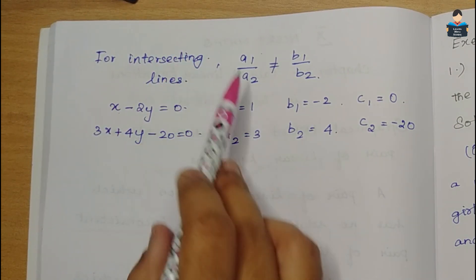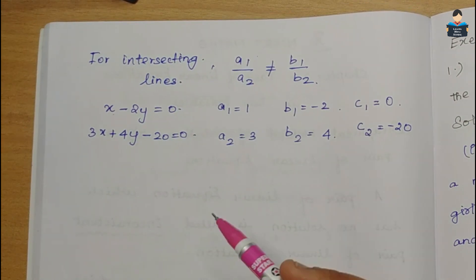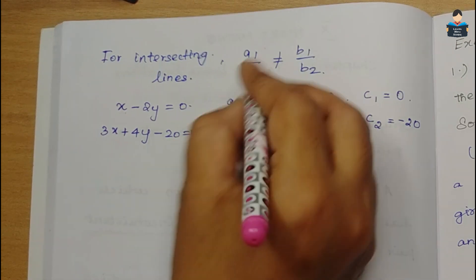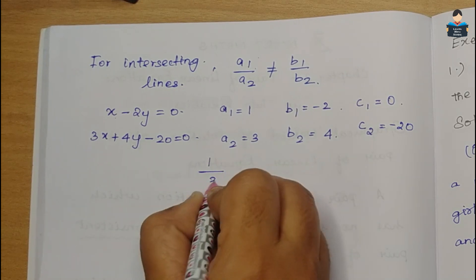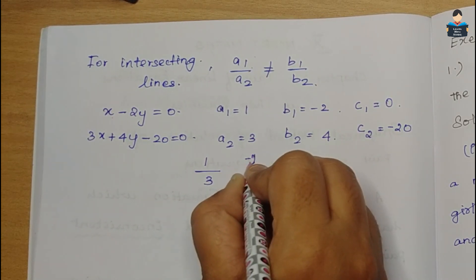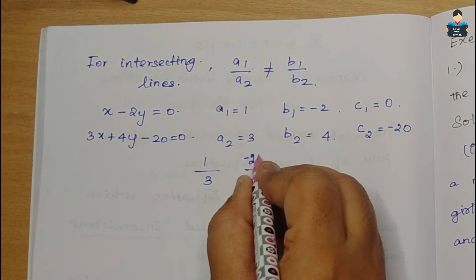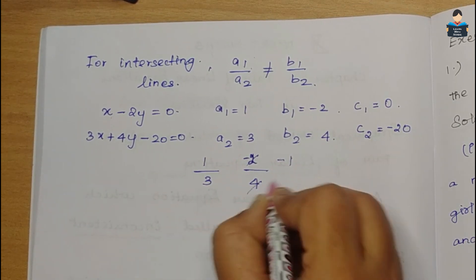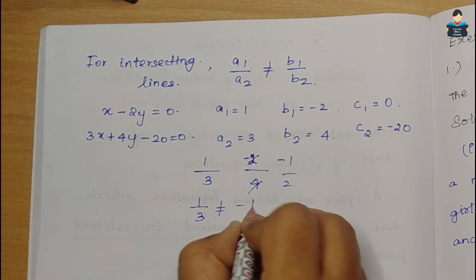For intersecting lines, we use the condition with a1, a2, b1, b2. We simplify: a1 by a2 equals 1 by 3, and b1 by b2 equals minus 1 by 2. Since 1/3 is not equal to -1/2, the condition a1/a2 ≠ b1/b2 is satisfied.